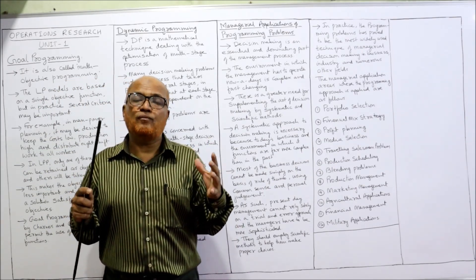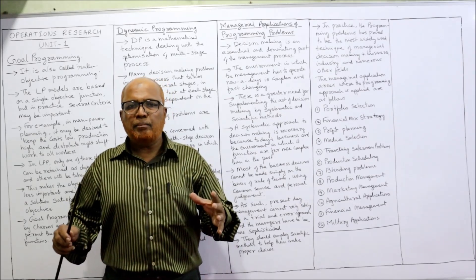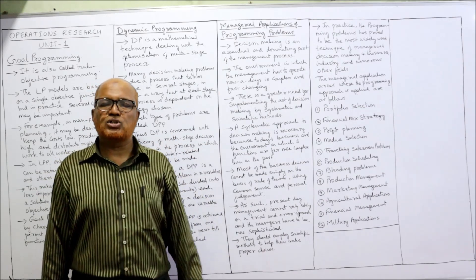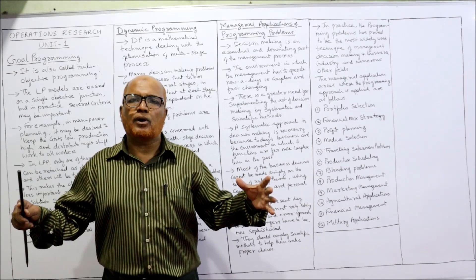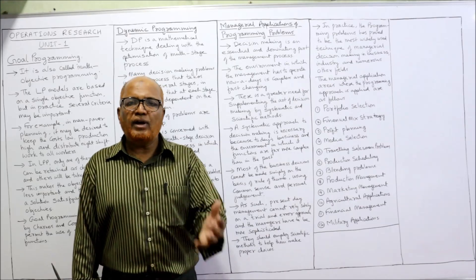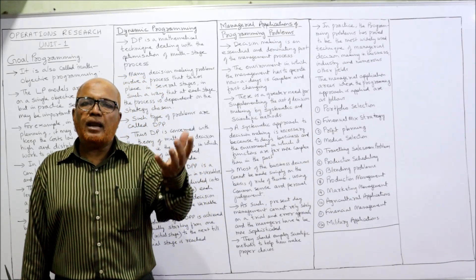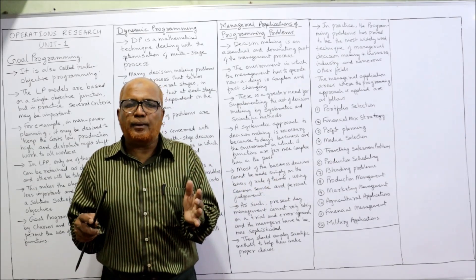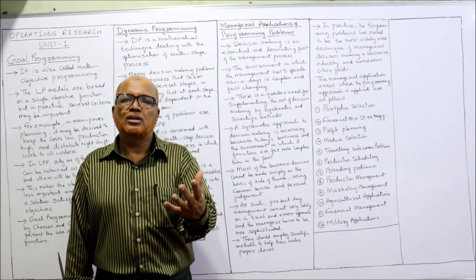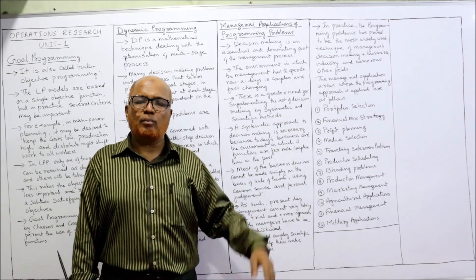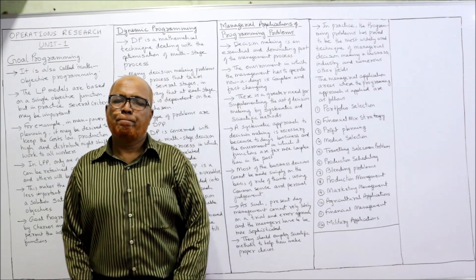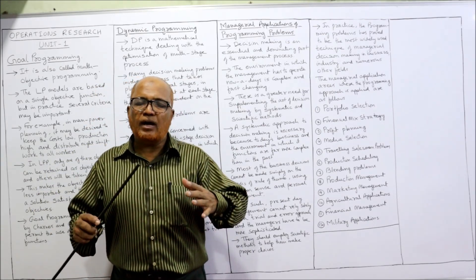Next is profit planning. Business organizations produce multiple products, and decisions must be made about how many units of each product to produce. Resources — material, men, machines, and time — are all limited. Using those limited resources, management must decide which product to produce to maximize profit. This is called profit planning, and programming problems are very helpful in this area.